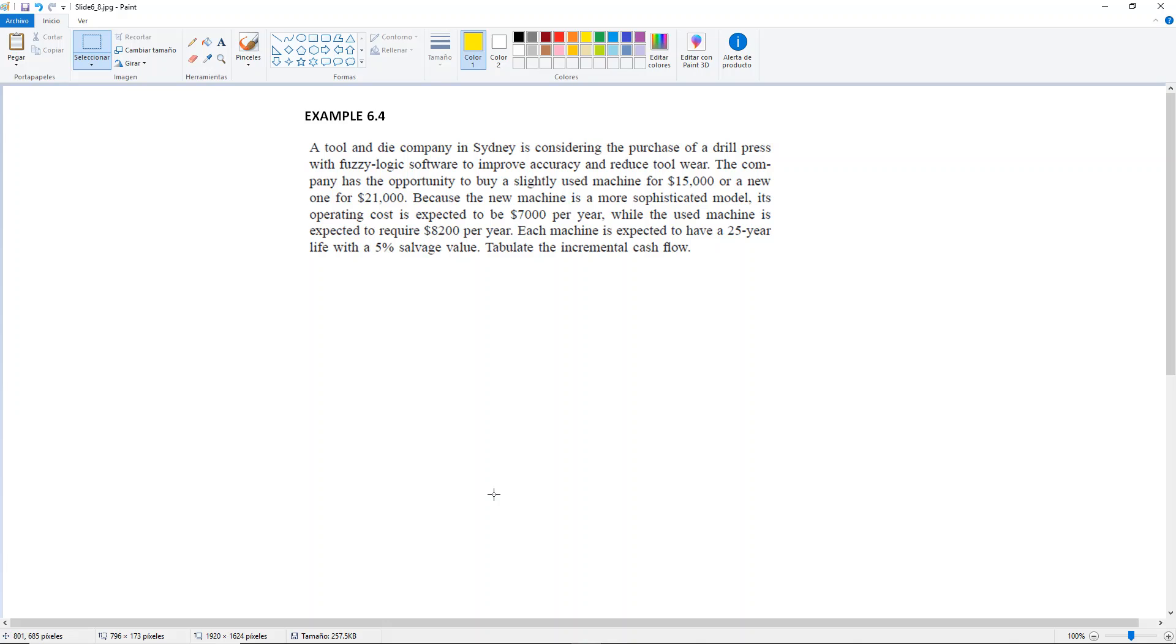Because the new machine is a more sophisticated model, its operating cost is expected to be $7,000 per year, while the used machine is expected to require $8,200 per year. Each machine is expected to have a 25-year life with a 5% salvage value. Tabulate the incremental cash flow.